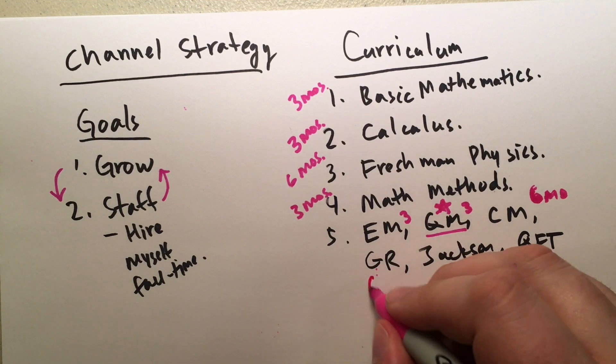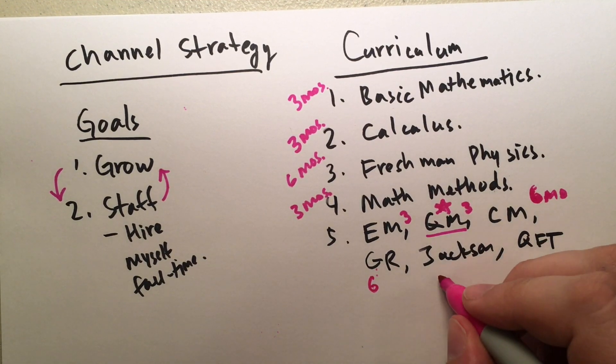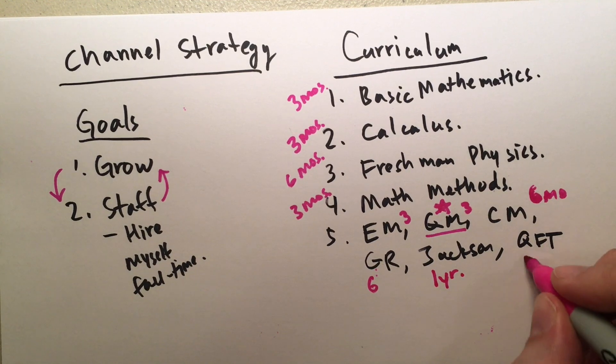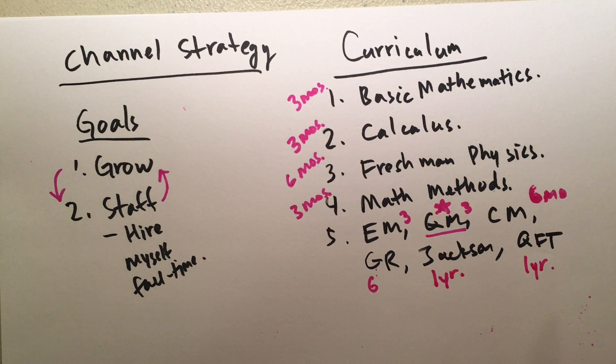Of course, I could be wrong. General relativity, again, I didn't learn that in college, six months for that. And Jackson's, maybe one year. And quantum field theory is the same thing, one year to build those videos. Those will take some time to do right.